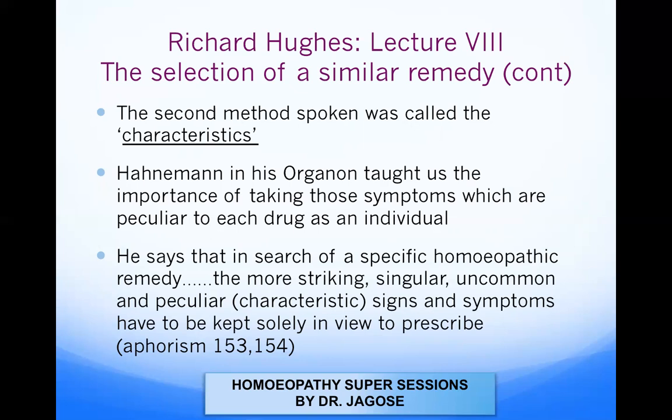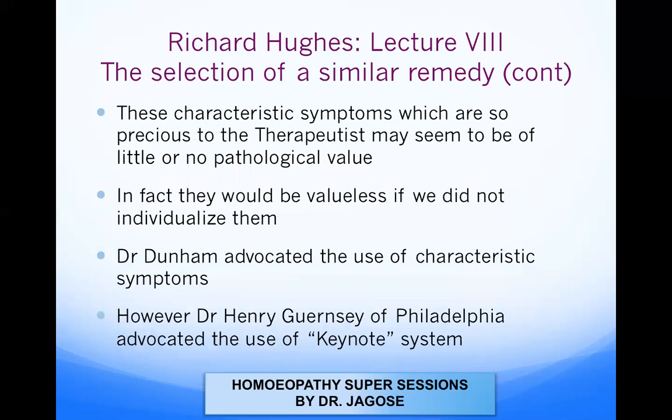The second method of individualization is based on characteristic symptoms. Hahnemann and the Organon taught us the importance of taking those symptoms which are peculiar to each drug as an individual. He says in search of a specific homeopathic remedy, the more striking, singular, uncommon, and peculiar — that is, characteristic — signs and symptoms have to be taken solely in view, per Organon paragraphs 153 and 154. Dr. Dunham educated the use of characteristic symptoms.